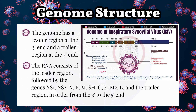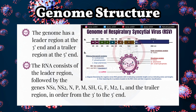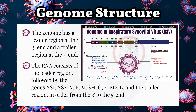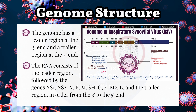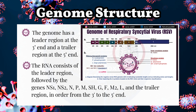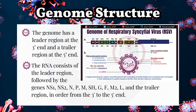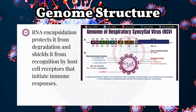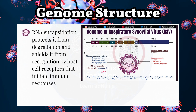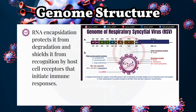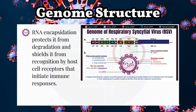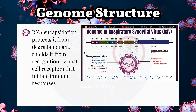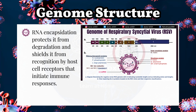The genome has a leader region at the 3' end and a trailer region at the 5' end. The RNA consists of the leader region, followed by the genes NS1, NS2, N, P, M, SH, G, F, M2, L, and the trailer region, in order from the 3' to the 5' end. RNA encapsidation protects it from degradation and shields it from recognition by host cell receptors that initiate immune responses.